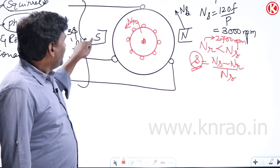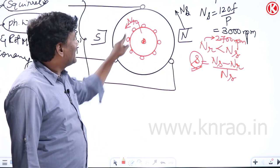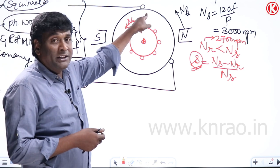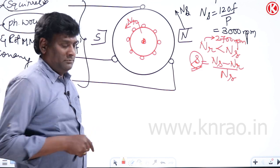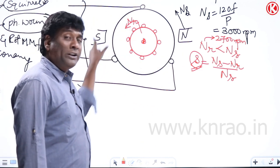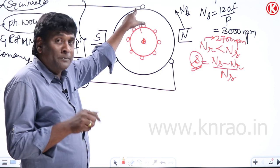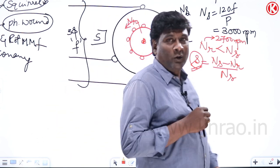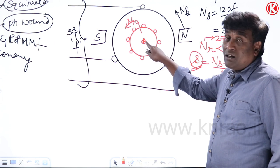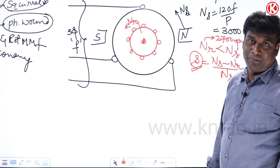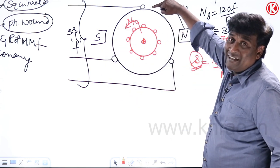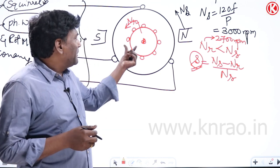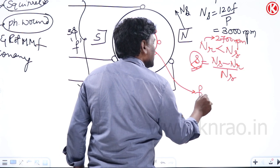When the rotor is stationary (0 RPM), stator MMF rotates at 3000 RPM relative to the rotor, so rotor frequency equals the stator frequency F1 (50 Hz) and slip = 1. When the rotor rotates at synchronous speed NS, the relative velocity is zero, so rotor frequency = 0 Hz and slip = 0. Therefore, rotor frequency = SF and slip varies from 0 to 1.